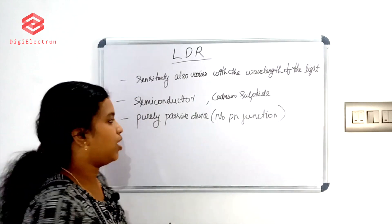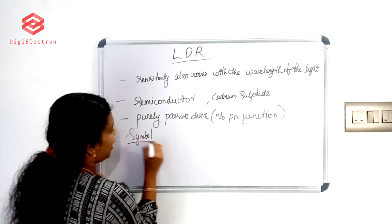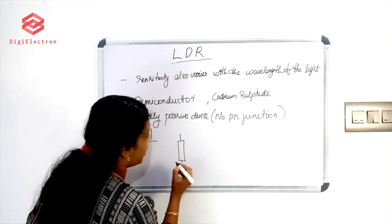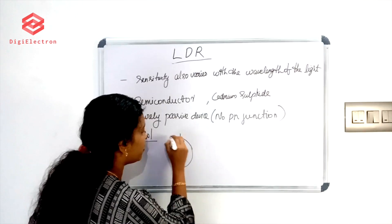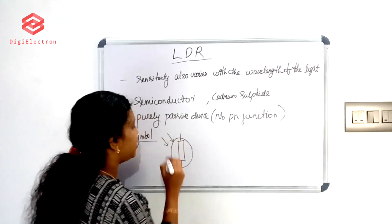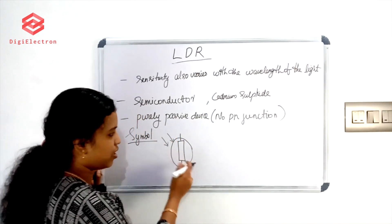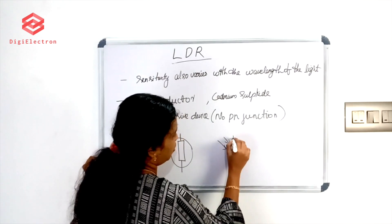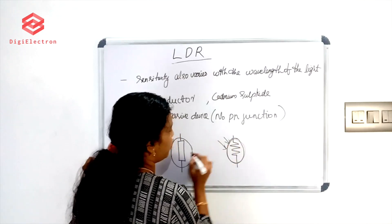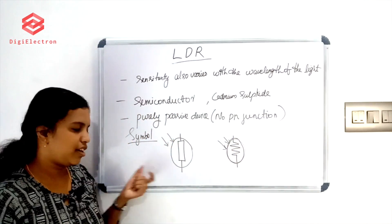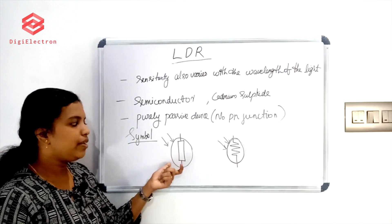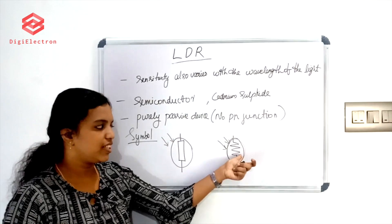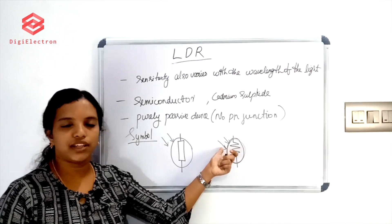The LDR symbol represents a light-dependent resistor. There are two types of LDR symbols. Both show a resistor with arrows indicating light incident on the device.